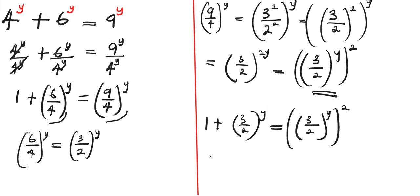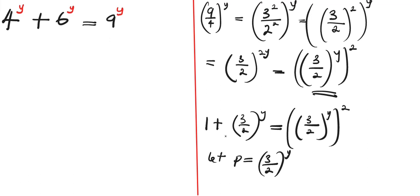Now let p = (3/2)^y. Substituting p into the equation gives us 1 + p = p². Rearranging, we get p² - p - 1 = 0, which is a quadratic equation.